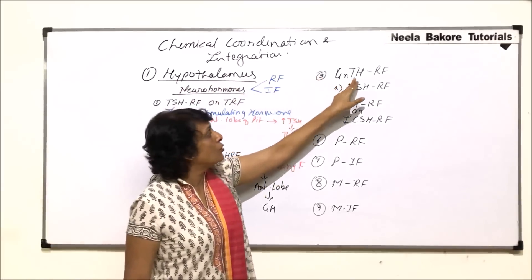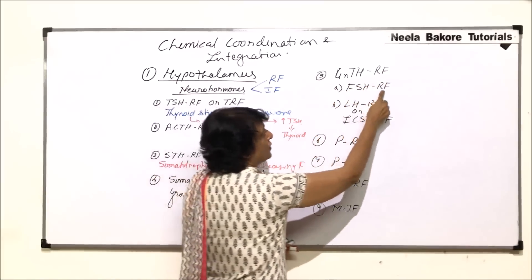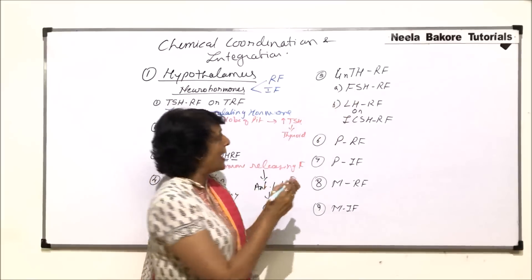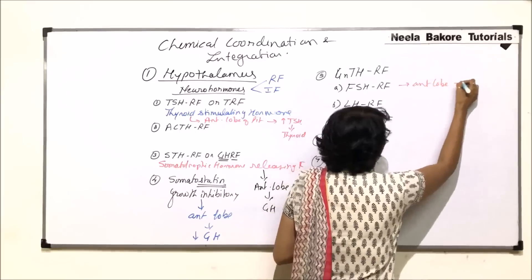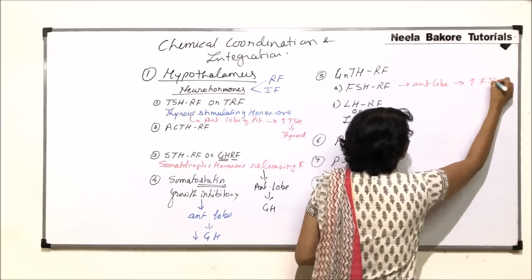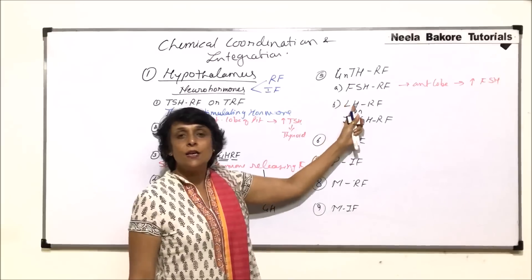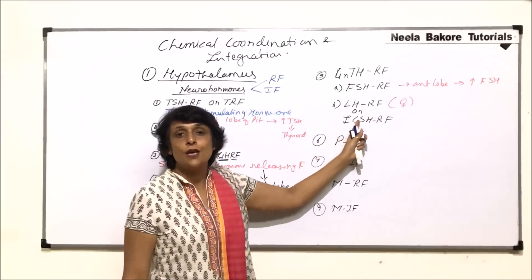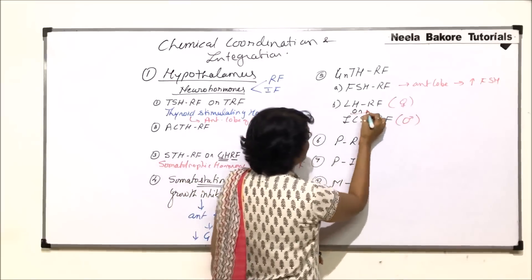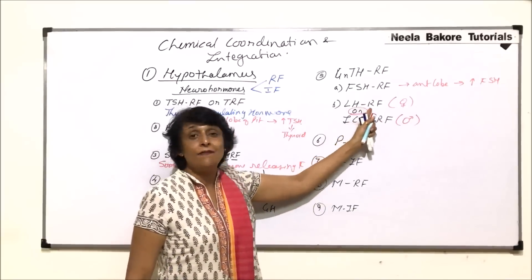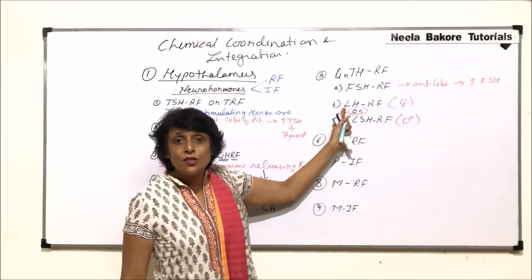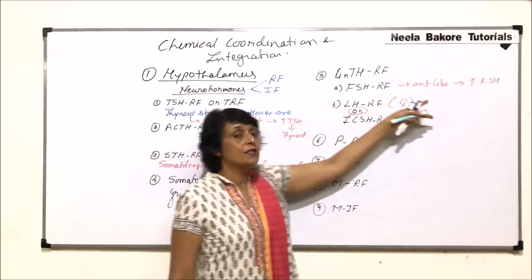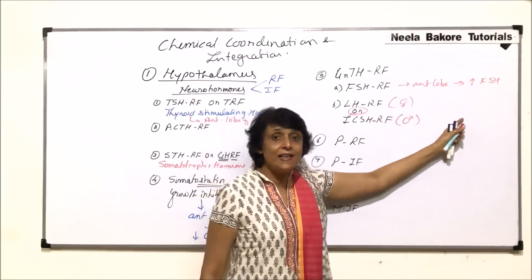The next category is gonadotropic hormone releasing factors: FSH releasing factor stimulates the anterior lobe of the pituitary to increase FSH production. Similarly, LH releasing factor stimulates LH production in females, while ICSH releasing factor stimulates interstitial cell stimulating hormone in males — so an individual will have either LH or ICSH. All of these stimulate the anterior lobe of the pituitary to secrete LH or ICSH respectively.